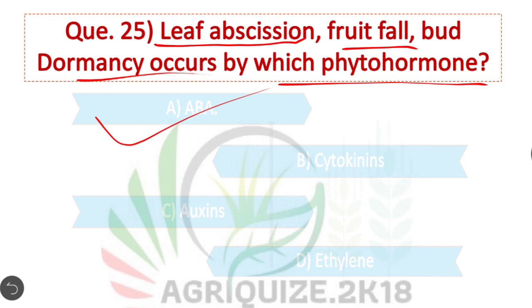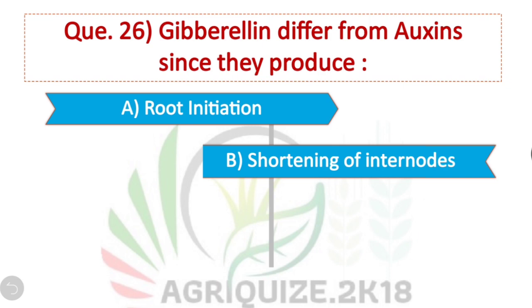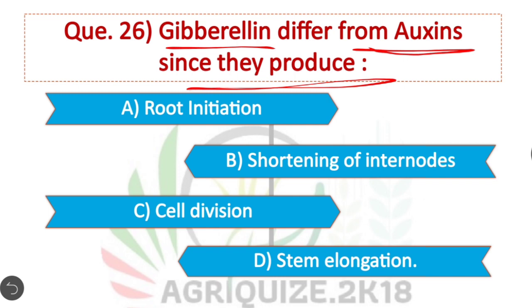Question 26: Gibberellin differs from auxin since they produce stem elongation. Option D is correct.